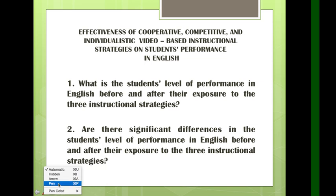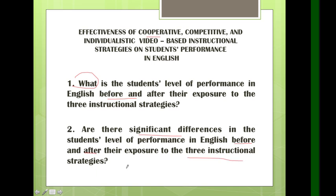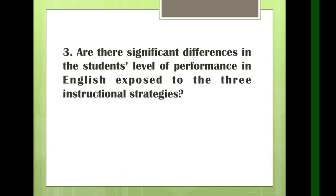The last title is: Effectiveness of Cooperative, Competitive, and Individualistic Video-based Instructional Strategies on Students' Performance in English. Question one — what is the student level of performance before and after — is descriptive. Question two asks about significant difference before and after, so we use paired sample t-test. Although there are three instructional strategies, we are comparing before and after within each group. But when comparing the three strategies against each other for their effectiveness, we use Analysis of Variance.